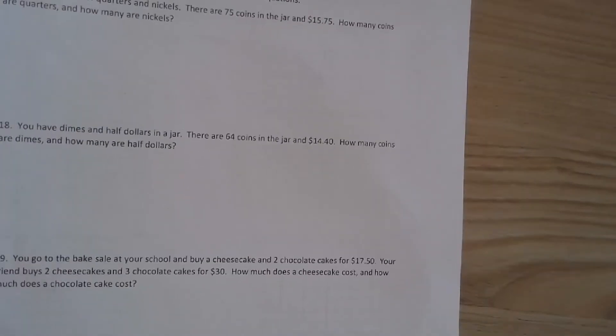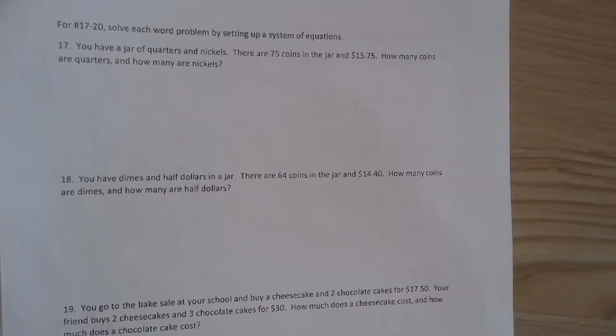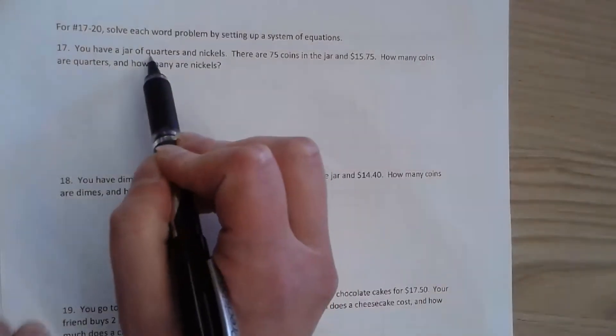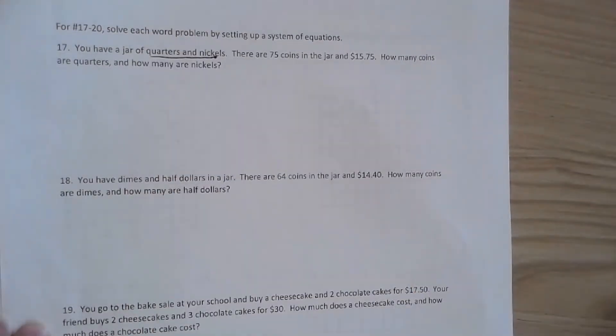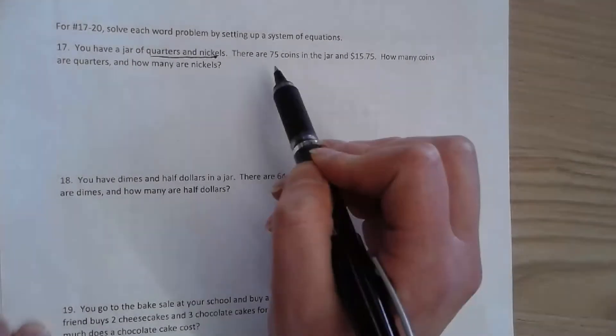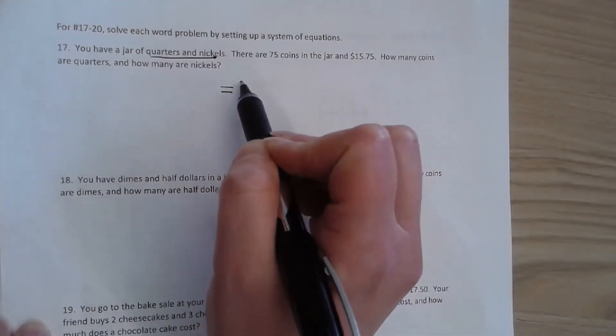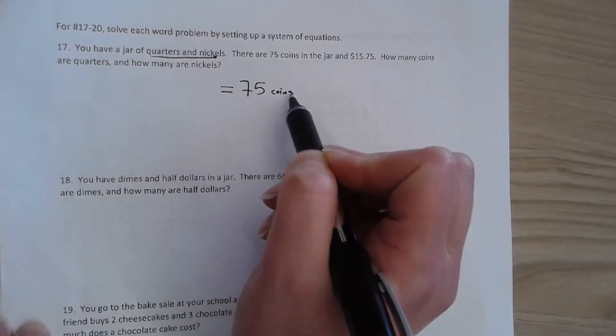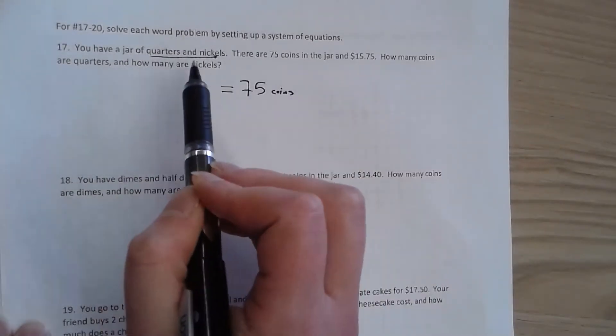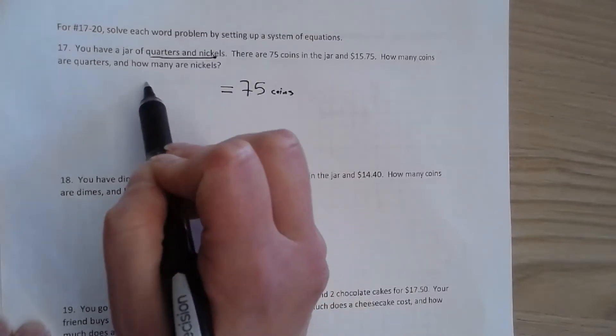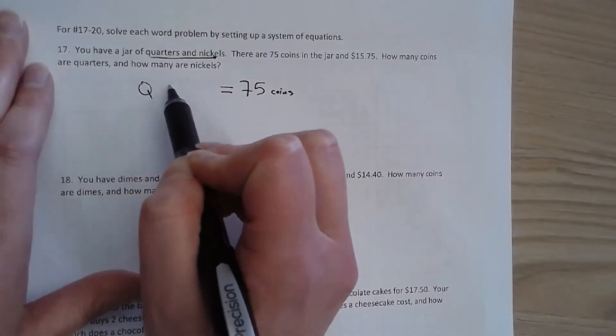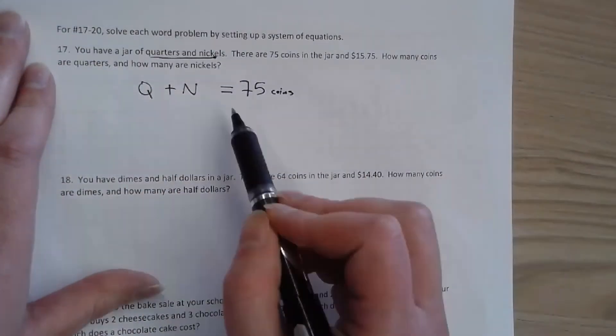If you look at 17, you have a jar of quarters and nickels. So quarters and nickels are our two types that we're dealing with. We know we have a total of 75 coins. So quarters plus nickels equals 75 coins.